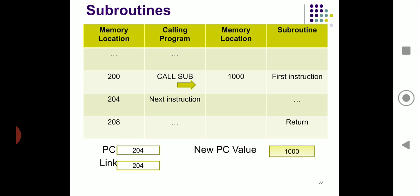Once the subroutine execution has finished, it reaches the return instruction. What the return instruction does is it goes back to the program counter, checks what the last instruction was, and sees that the memory value stored there is 204, and it starts execution again from 204. So the return instruction branches to the specific address which is stored inside the link register.